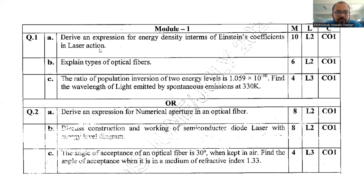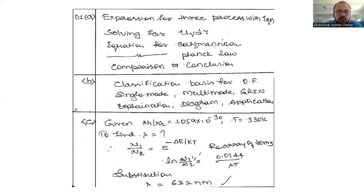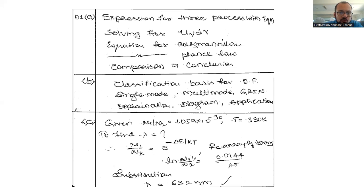Let me show you the brief idea about the answer key. Question number one: derive an expression for energy density in terms of Einstein coefficient. You have to follow the expression for three processes with equations, then solving for this particular segment, then equation for Boltzmann, then Planck's law. Finally, comparison and conclusion.